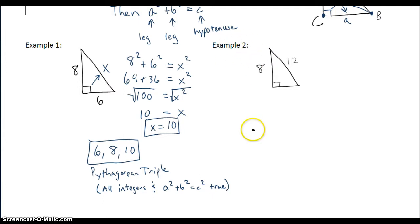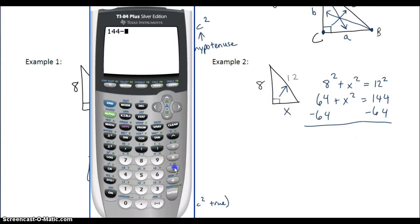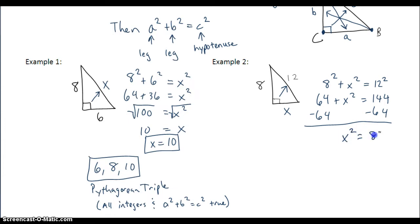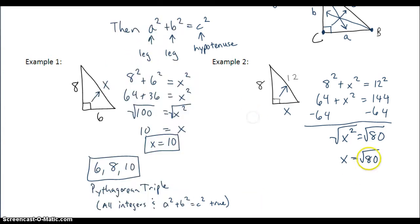Let's look at example 2. We know the hypotenuse in this case, so our missing side is actually a leg. It doesn't make a difference which value we put in for a and b, as long as our c value is correct. To solve for x, I need to subtract 64. 144 minus 64 is 80, so I have x squared equals 80. To solve for x, I need to take the square root of both sides. The square root of x squared gives me x, and I'm left with the square root of 80. If I try to take the square root of 80, I don't end up with an integer, so I'm going to have to simplify.